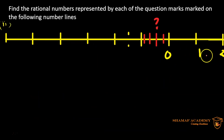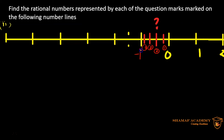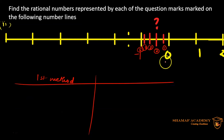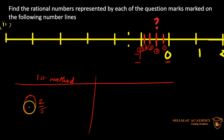Moving to the next question: we have 2, 1, 0, and then negative 1. There are 5 divisions, and we need to find the 2nd one. We cannot use the first method — the mixed fraction method — here, because the number starts from 0. If I put 0 as the main number and try to convert, I'd multiply 0 by 5, which all becomes 0. So the mixed fraction method doesn't work here.